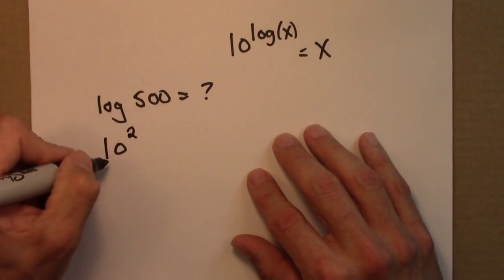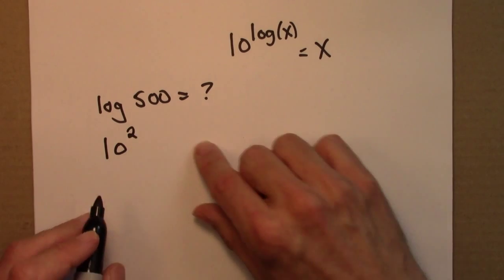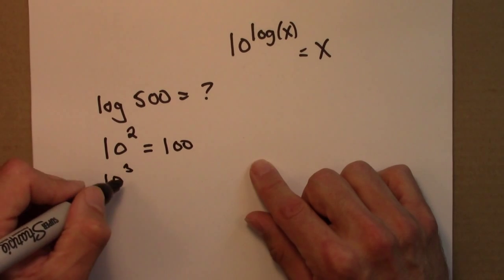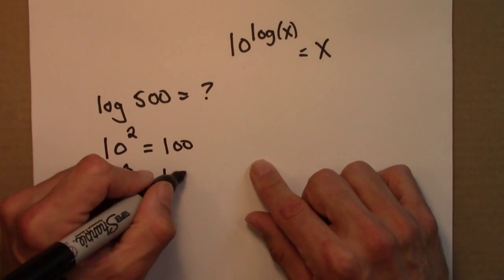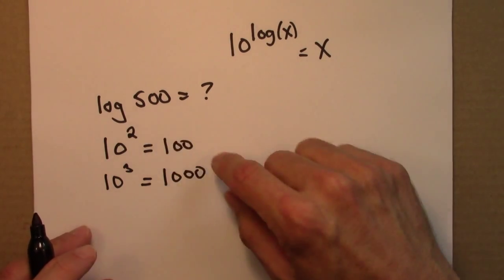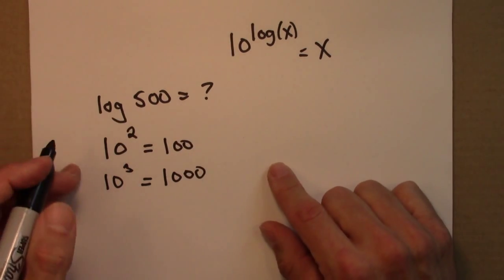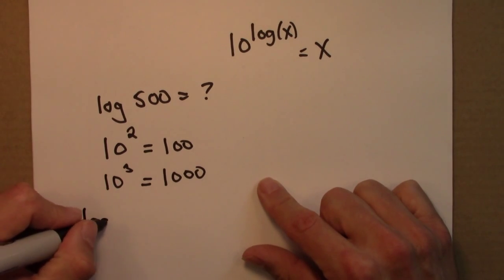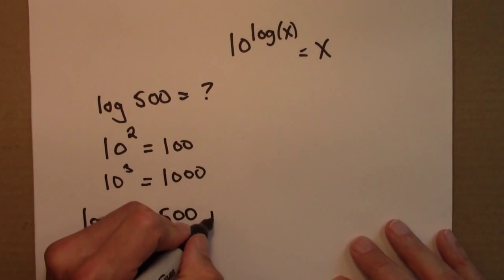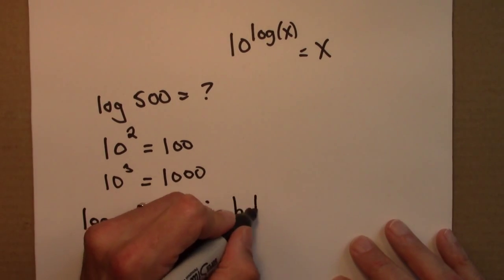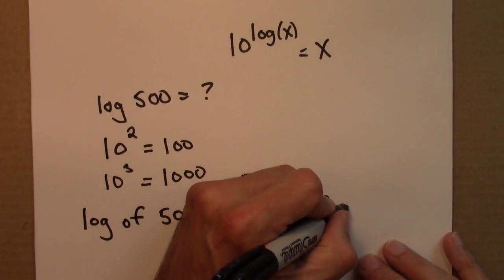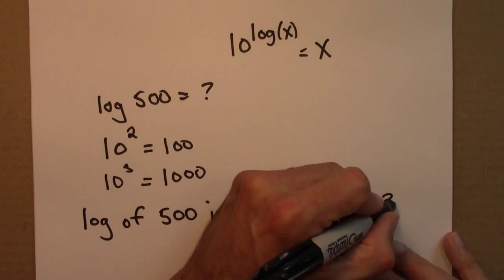10 to the 2 is 100. 10 to the 3 is 1,000. So 500, because it's between these two numbers, the log of 500 must be between 2 and 3. So log of 500 is between 2 and 3.